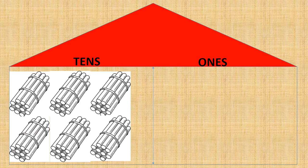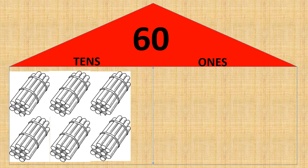Let's count the bundles in tens place. One, two, three, four, five, six. We have six tens. But look here, there is nothing in ones place. So six tens gives us the number sixty.